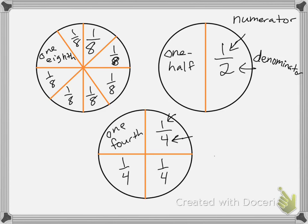All right, so remember that the number at the bottom, so in this case the eight, that's called the denominator. We can remember it because denominator starts with D, and so does the word down.